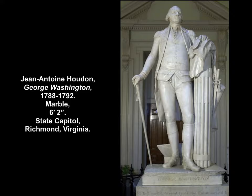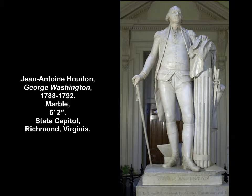Exhibiting a slight contrapposto stance, Washington clearly reminds us of the sculptures from ancient Greece, the birthplace of democracy and representative government. Unlike portraits of monarchs, Washington rests his right hand on a simple walking stick instead of a scepter and rests his left hand on his army jacket, now hung up and unused, atop a bundle of 13 rods representing the 13 colonies who then became the 13 states. As with most neoclassical works, especially in America, Houdon's sculpture borrows recognizable elements from classical artistic traditions in order to communicate meanings for a contemporary subject matter and a contemporary audience.